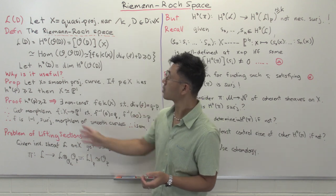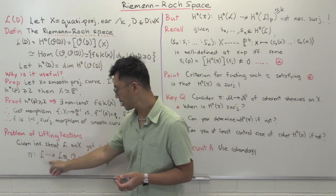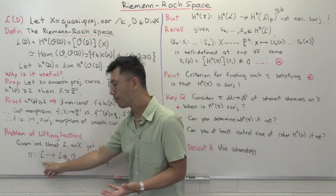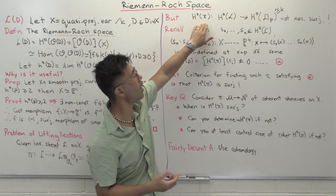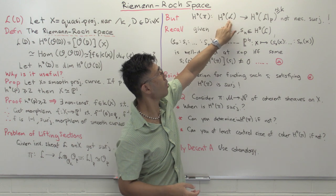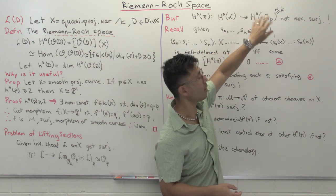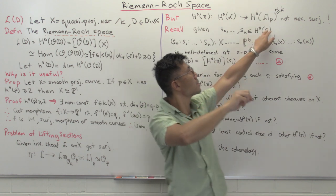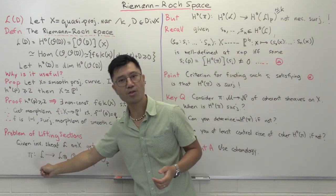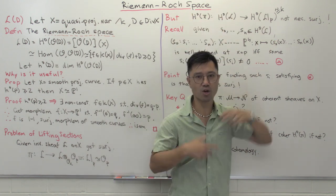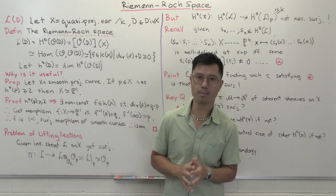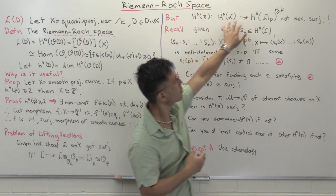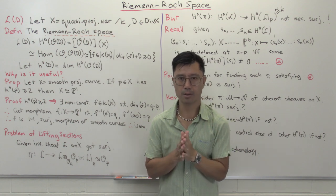So there you have a surjective map, and this is going to be very important. For any open set of X you also have a map; in particular looking at global sections, you get H⁰(X, L) mapping to the sections of L restricted to P on X, which is isomorphic to K. One of the things that's rather subtle is: even though this sheaf map is surjective, the induced map on global sections is not necessarily surjective. We'll see examples of this later on.